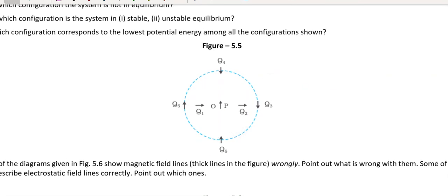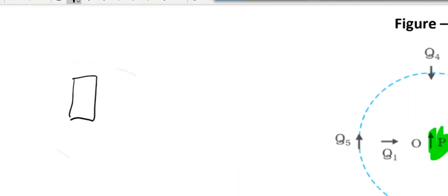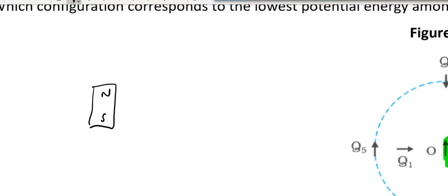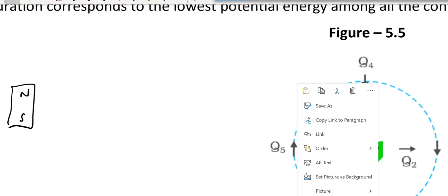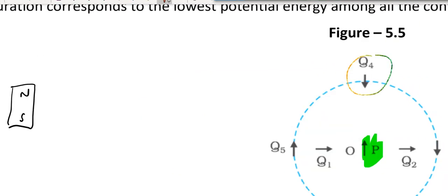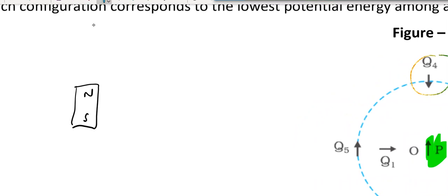The diagram shows that each arrow is a tiny magnet. If I consider one magnet at point p, the arrow is indicating its magnetic dipole moment. You are given different situations. In one situation you have one magnet kept like this, say north and south, and q4 here is facing the north-south.